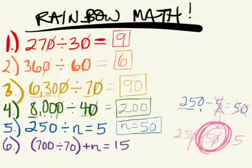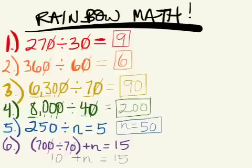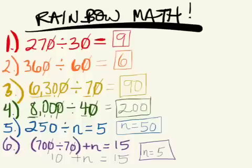What about number 6? Maybe I should start by simplifying what's in the parentheses: 700 divided by 70. Eliminate those zeros — 70 divided by 7 is 10. So 10 plus n equals 15; in other words, 10 plus something equals 15. In that case, n equals 5. You can solve a tough algebra problem that looks very complicated — you can figure it out. That's it for rainbow math and for how to divide by multiples of 10, or another fascinating episode of cheating with zeros. Good day!